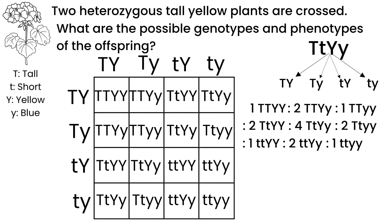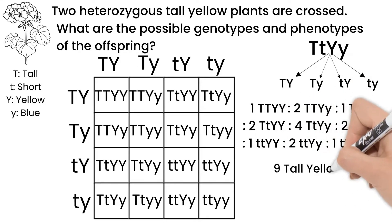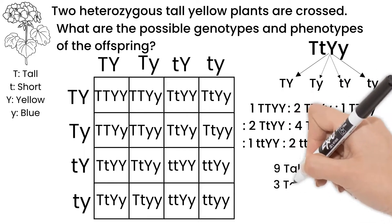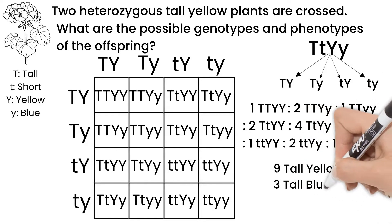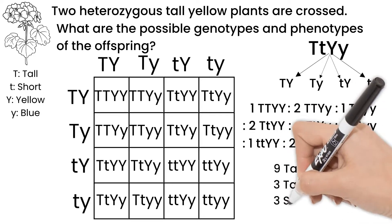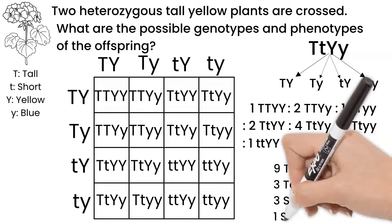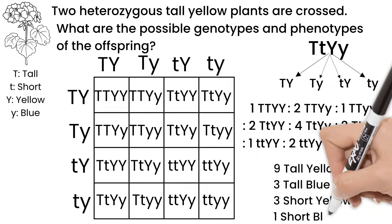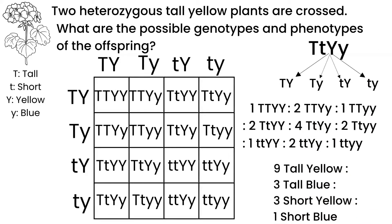The phenotype ratios are 9 tall yellow, 3 tall blue, 3 short yellow, and 1 short blue. When doing these questions, if you want to check you didn't miss one, your ratios will add up to 16.